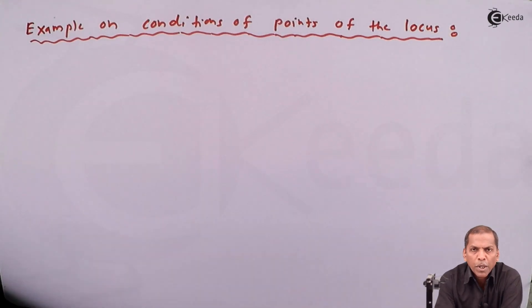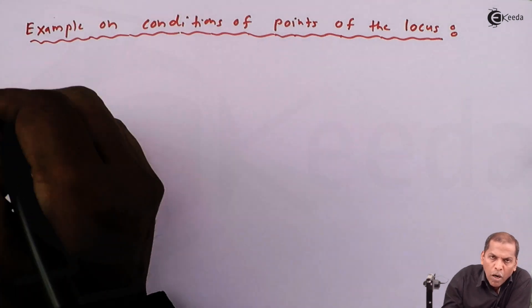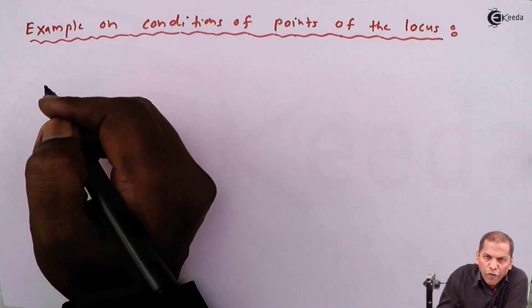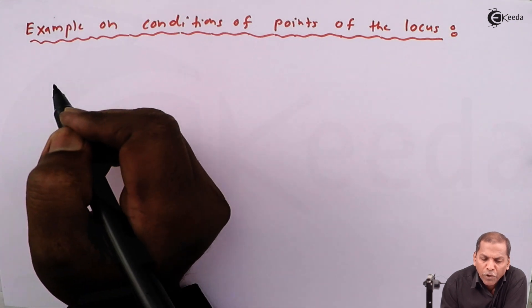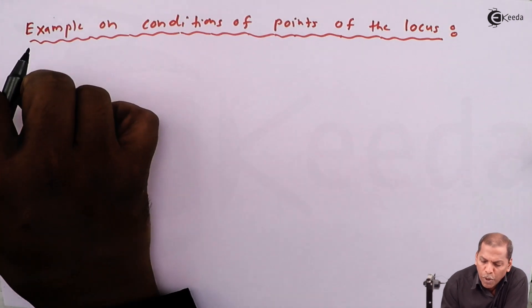Hello friends, now we see an example which is based on condition of points of the locus. Consider the equation of locus is 2x plus 3y minus 23 equals 0.